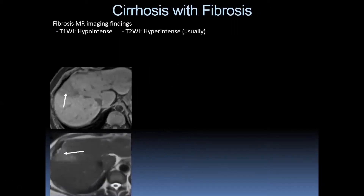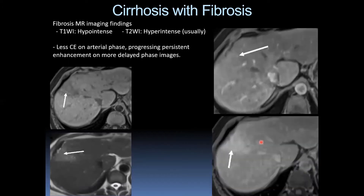Let's talk about fibrosis with cirrhosis. Typical MR findings include T1 hypointensity and T2 hyperintensity, with a diffuse or geographic appearance. We see a wedge-shaped area of T1 hypointensity and T2 hyperintensity, and on post-contrast imaging, heterogeneous enhancement in the arterial phase with progressive enhancement persisting on delayed phase. Reticular areas of post-contrast enhancement are also visible, all consistent with focal and diffuse hepatic cirrhosis with fibrosis.